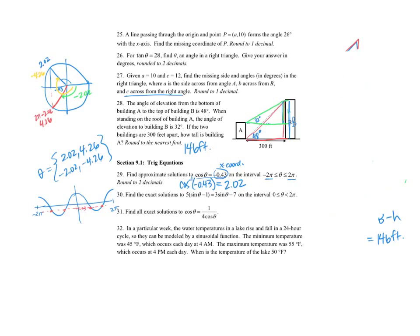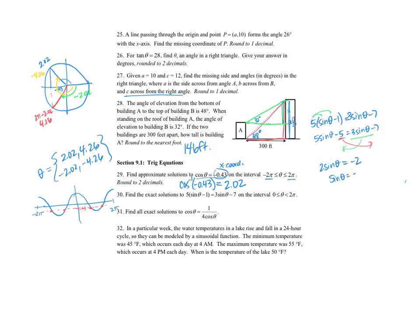For the next problem I need to find all exact solutions using some algebra. I have 5 times the quantity sine theta minus 1, equals 3 sine theta minus 7. Distributing the 5 gives 5 sine theta minus 5 equals 3 sine theta minus 7. Moving sine terms to one side: 2 sine theta equals negative 2, so sine theta equals negative 1.